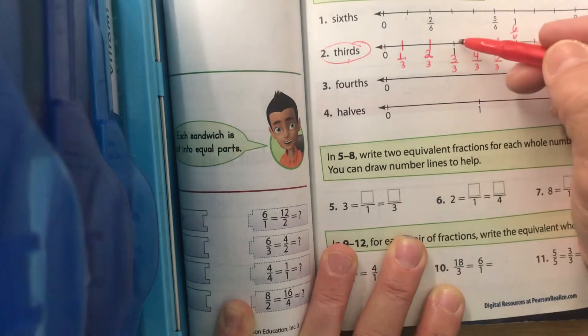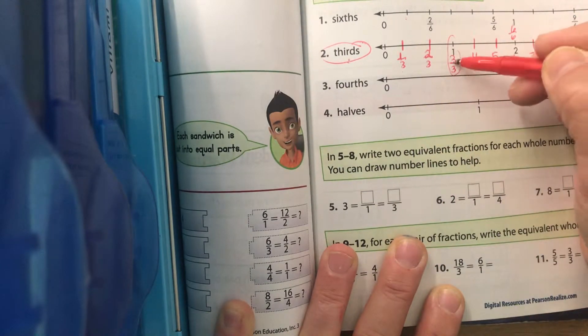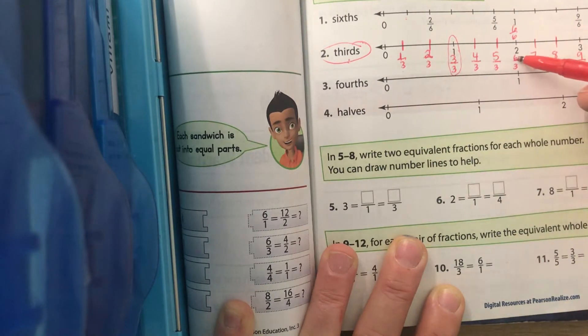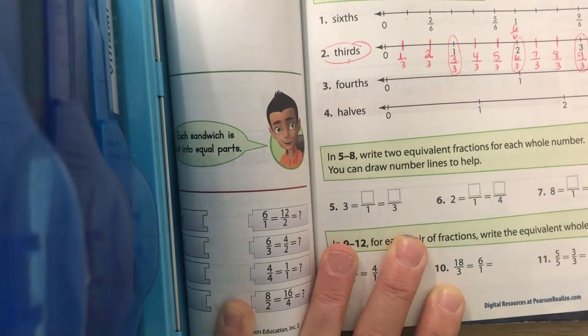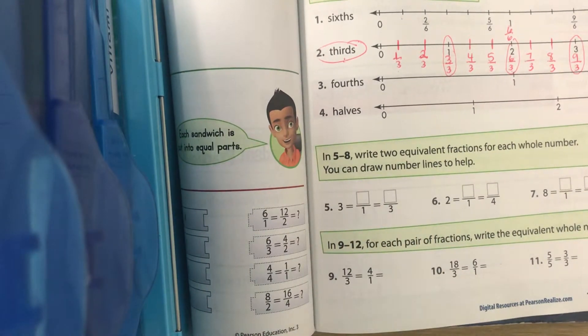Did you stop and check at your whole numbers? Is 3 divided by 3 equal to 1? Yes. Is 6 divided by 3 equal to 2? Yes. Is 9 divided by 3 equal to 3? Yes. And is 12 divided by 3 equal to 4? Yes. That's what we want to check.